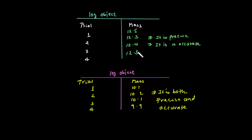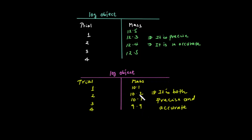If the object is not measured accurately — if the values are not accurate — we can still work with a 10-gram object. We need to find the difference between the values. In this case, the average value is the same because the values are identical. So this is both precise and accurate.